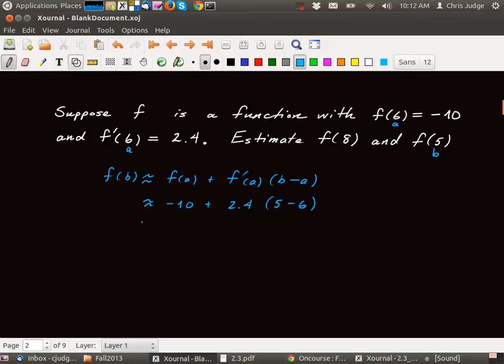So we end up with minus 10 plus 2.4. 5 minus 6 is minus 1. So we get minus 10 minus 2.4, which is minus 12.4. And so that's an estimate of, in this case, f of 5.